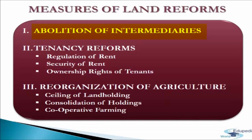This resulted in passing of the common land such as forest, wasteland, etc. to the state government. Statistics show that in all, 173 million acres of land was acquired from the intermediaries, and as a result about 2 crore tenants were brought into direct relationship with the state. The intermediaries, that is the zamindars, were compensated in lieu of the land taken by the government.